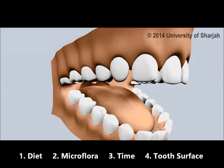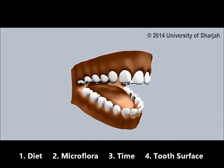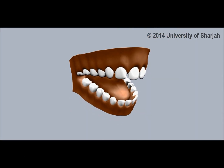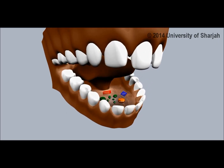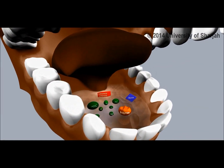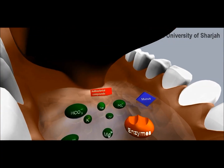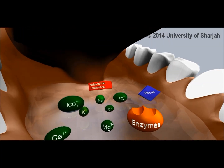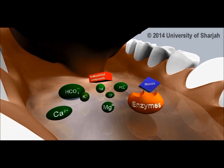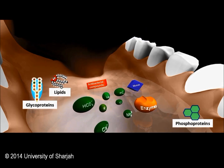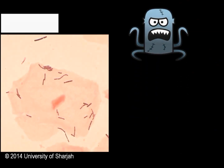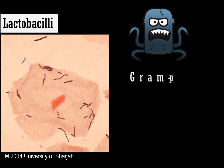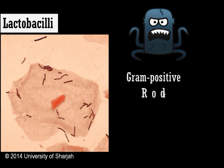Saliva has a buffering effect and plays a role in the demineralization and remineralization process. It contains enzymes, mucus, antibacterial compounds, minerals, glycoproteins, lipids, and phosphoproteins.